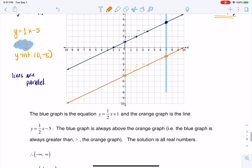So the blue graph is the equation for y equaling 1/2x + 1. Orange, we said 1/2x - 5, and the blue graph is always above the orange graph. So the solution is all real numbers. All right, thanks so much. Bye.